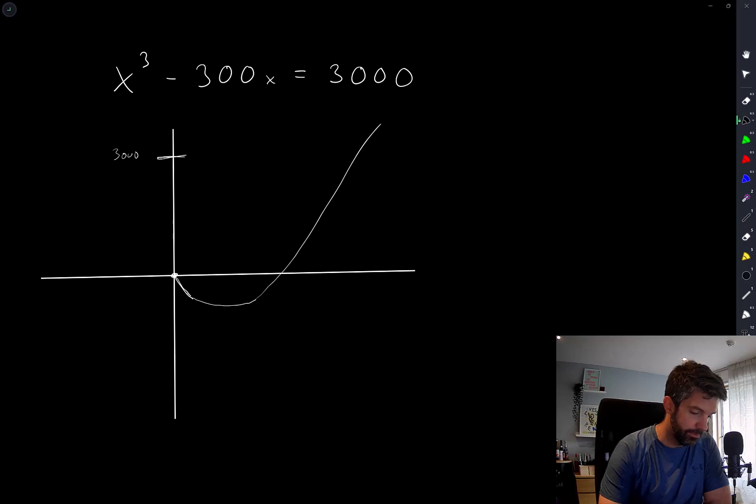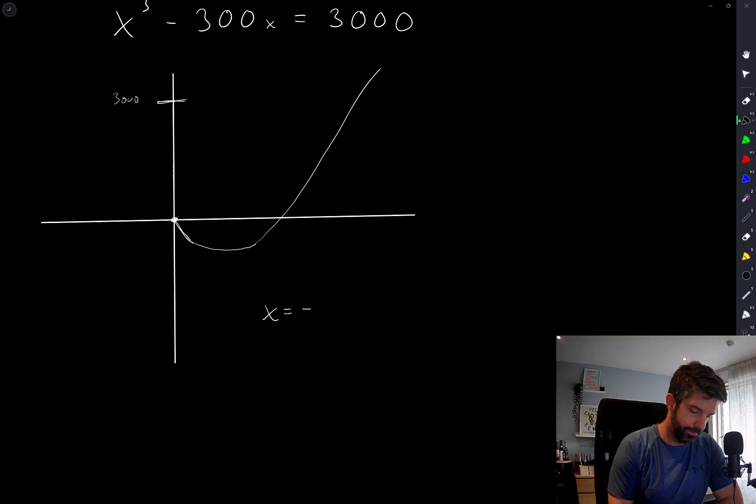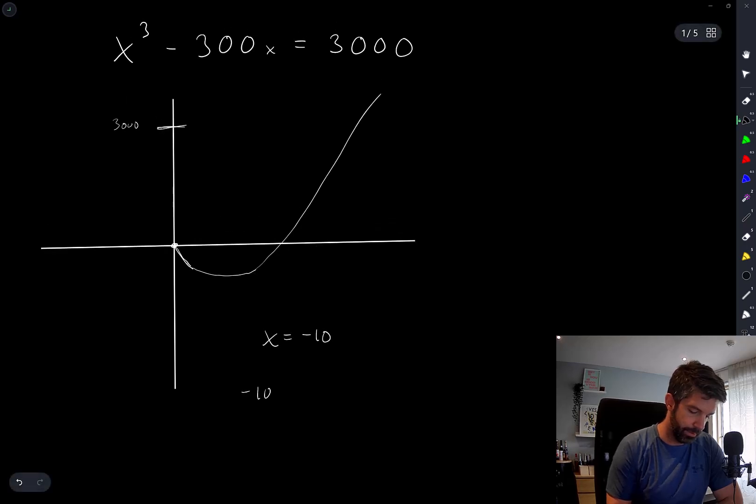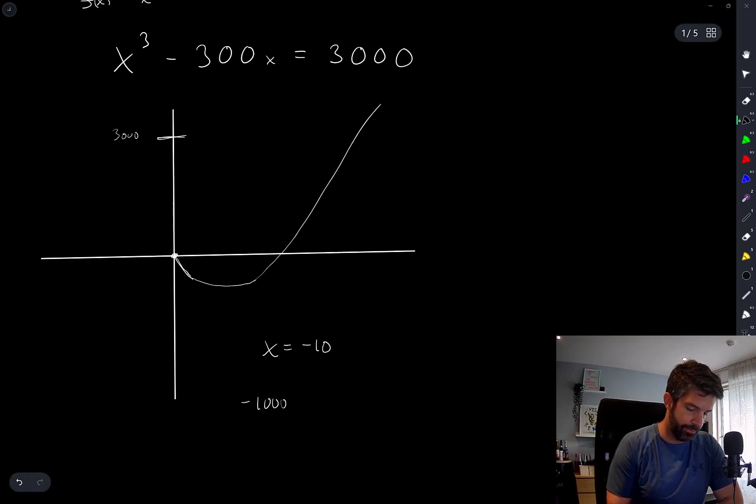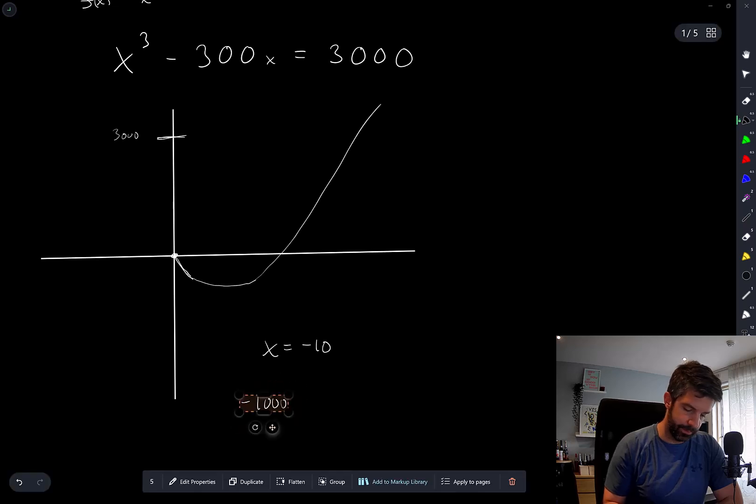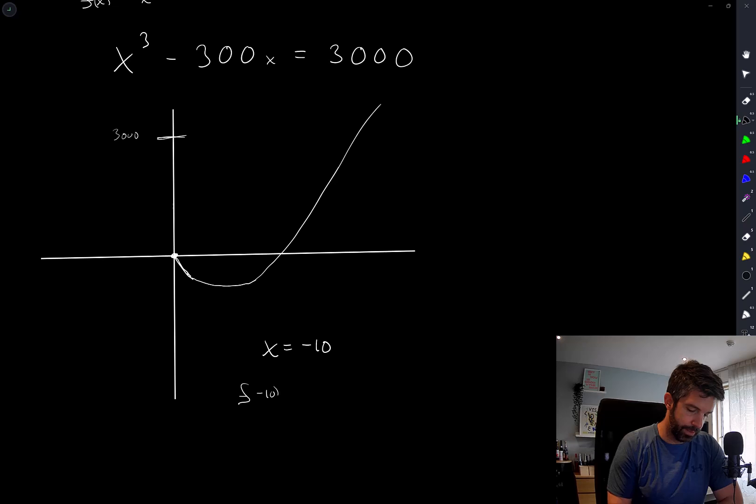So the question is, is there a negative value of x? And if there is a negative value of x, there will in fact be two negative values of x. If x is negative 10, we have negative 1,000. I'm going to say F of x is equal to x cubed minus 300x. Then F of negative 10 is equal to negative 1,000 plus 3,000.